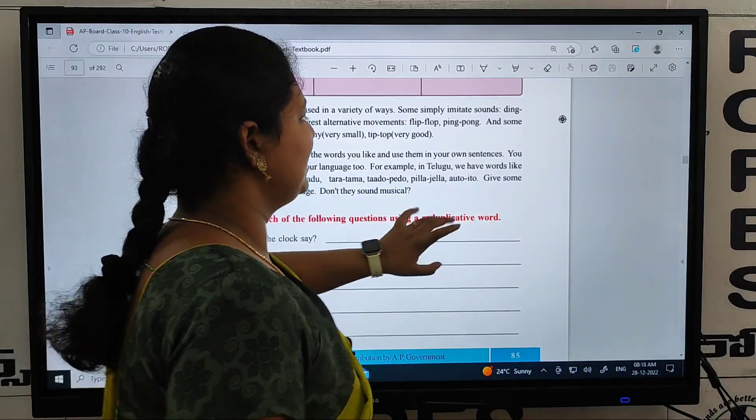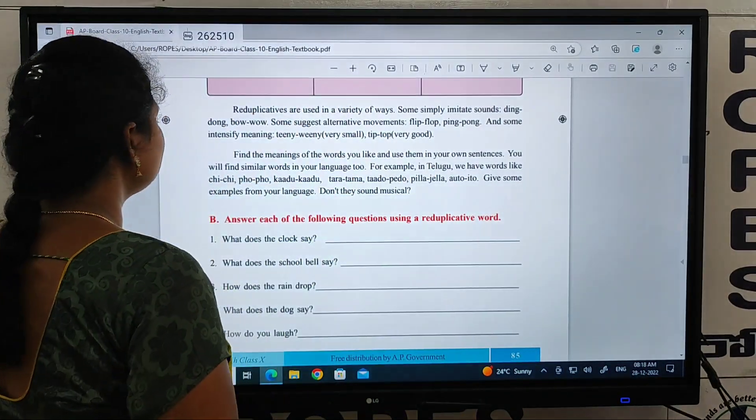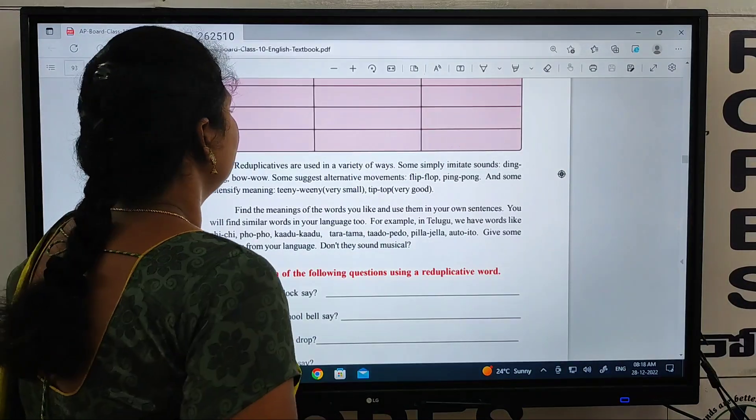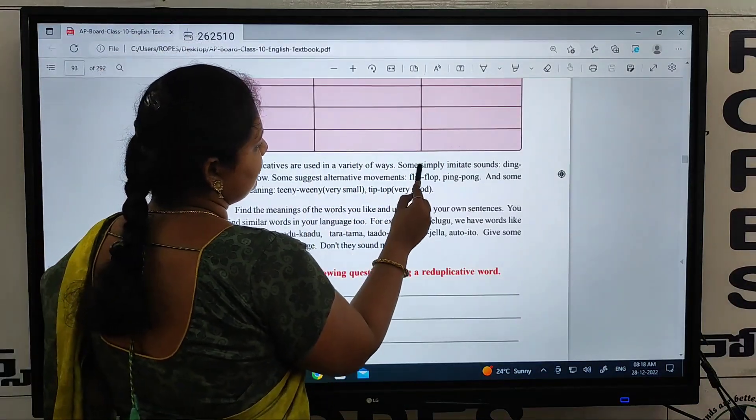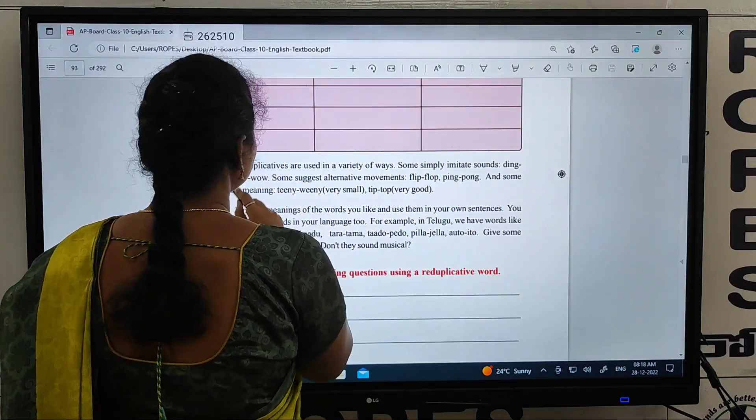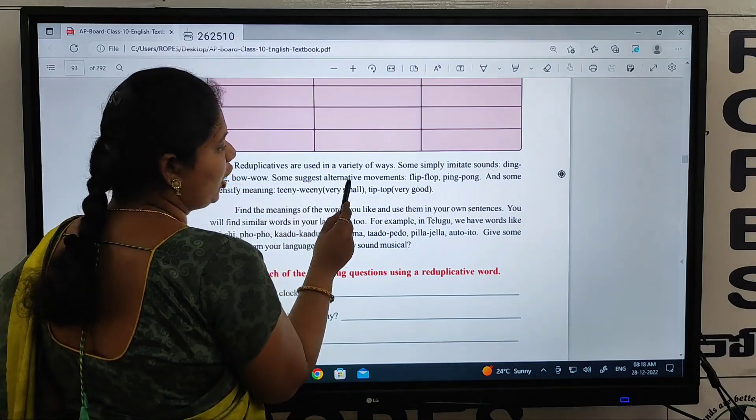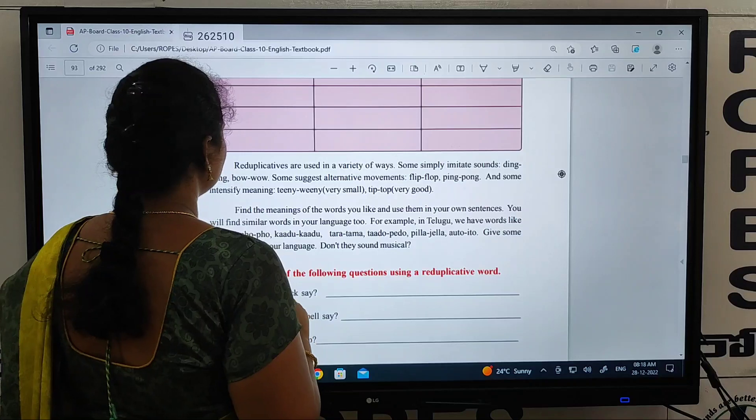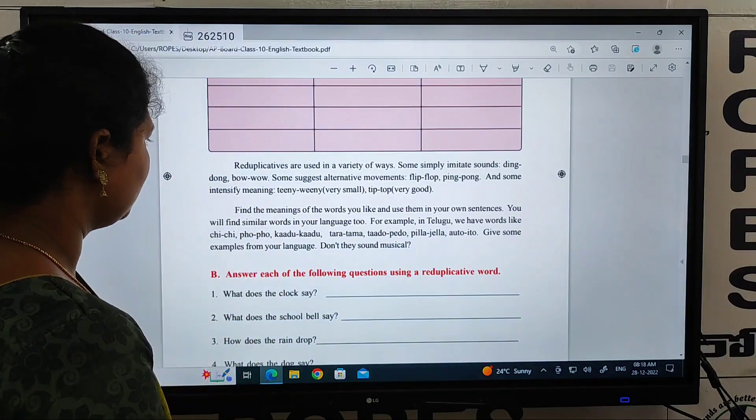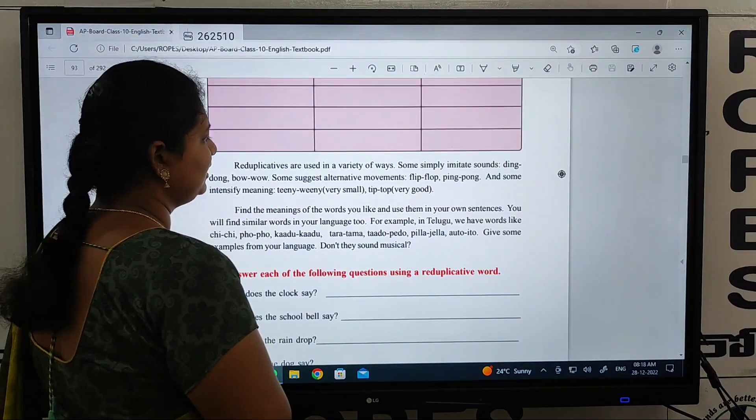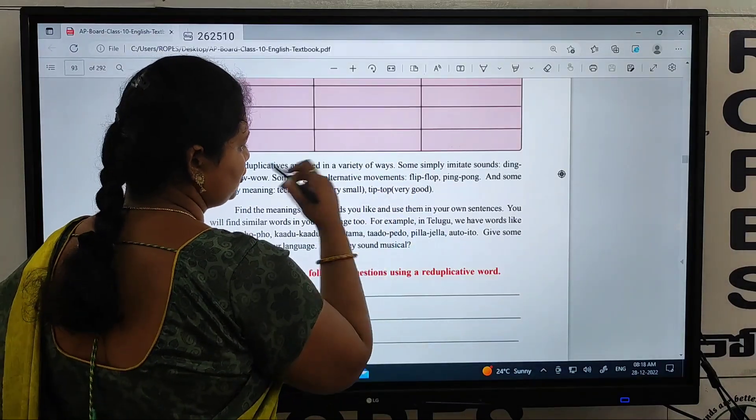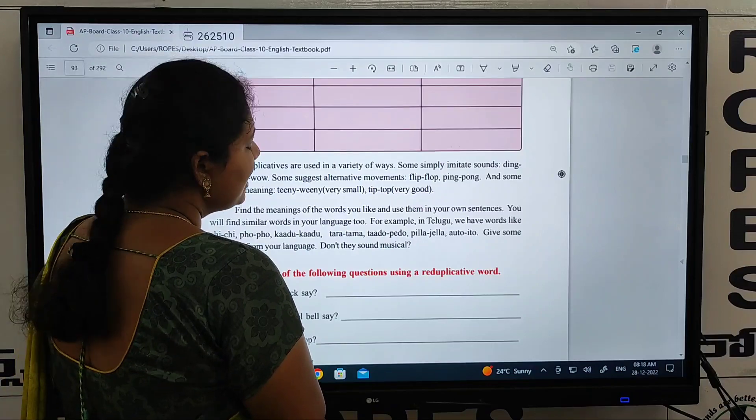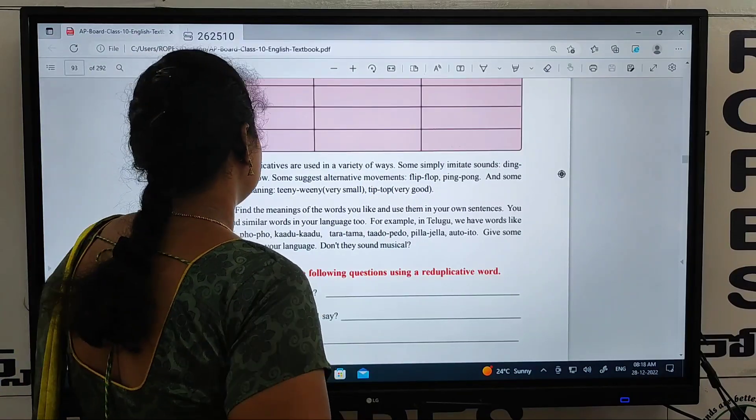Find the meanings of the words, then use them in your sentences. So, for example: chichi, popo, kadu kadu, tara tama, tado pedo, pilla jalla, atto itto. Give some examples. Reduplicative words used to simply imitate the sounds: ding dong, bow wow. Some suggest alternative movements: flip flop, ping pong.